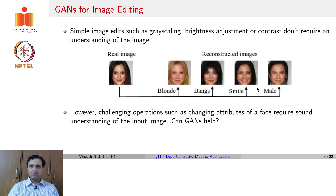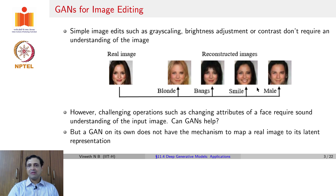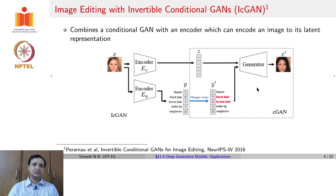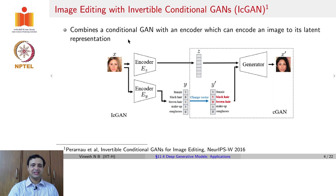Can GANs help here? Possibly. However, GANs do not have an inherent mechanism to map an image to its latent representation. We saw VAEs can do it, but VAEs sometimes can suffer from reconstruction issues as we discussed in the VAE-GAN lecture. This was proposed in a variant of GAN called Invertible Conditional GANs, presented at a NeurIPS workshop in 2016, called ICGAN. The way ICGAN achieves this objective is through a specific architecture — a conditional GAN similar to what we saw earlier this week for GANs across domains.